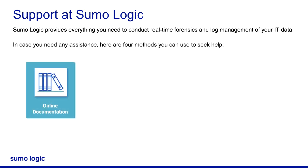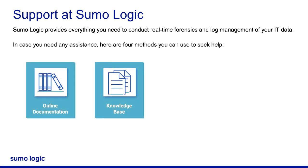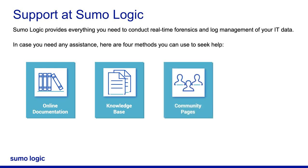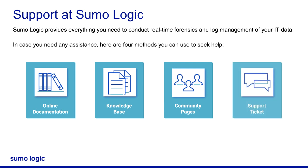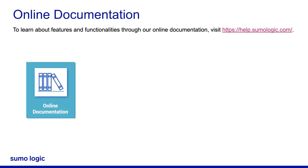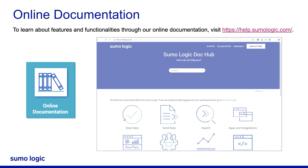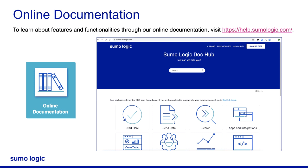You can refer to our online documentation pages. To learn about the various features and functionalities through our online documentation, visit help.sumologic.com. Sumo Logic Doc Hub has a substantial amount of information on various topics such as getting started, sending data, apps and integration, metrics, APIs, and so on. Use the search option to look for your topic in case it is not listed on the page. The goal of the DocHub is to help everyone find the right answers to their Sumo Logic questions.